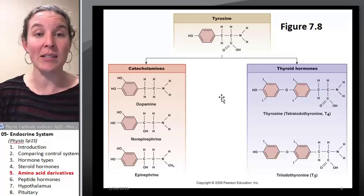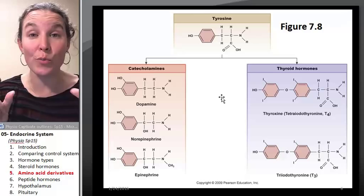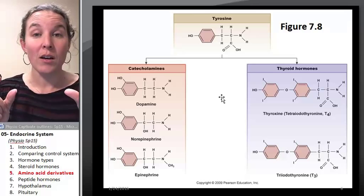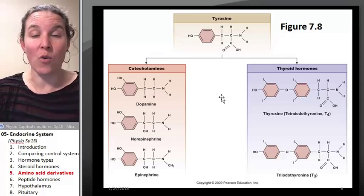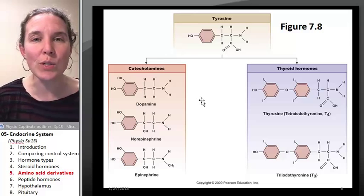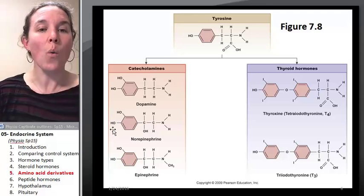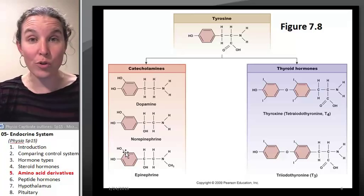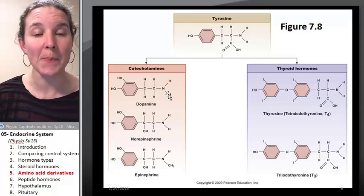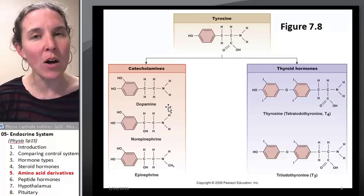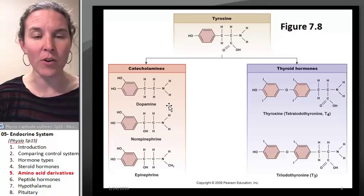Tyrosine is an amino acid that gives rise to two groups of amino acid-derivative hormones, and they have two different mechanisms. So one of the groups is the whole group called the catecholamines. And the catecholamines, hopefully, you look at these guys and you're like, wait a minute, I've heard of those guys.